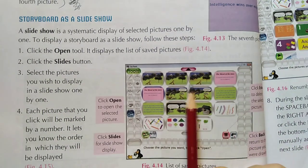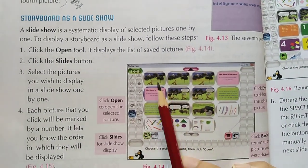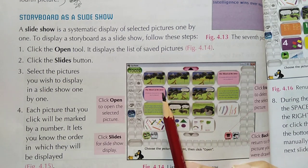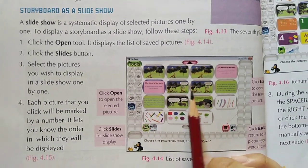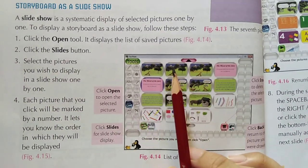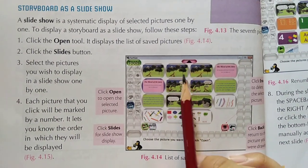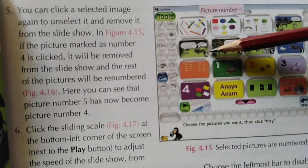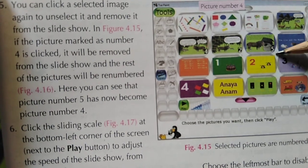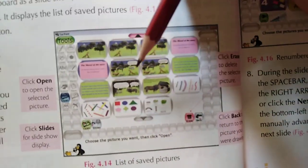The saved pictures are shown here. Then select the pictures one by one which you want to add in your slideshow. Whenever you select any picture, it will be assigned a number, for example 4, 2, 5, 1 as you can see here. If you want to erase any picture, just select that picture.